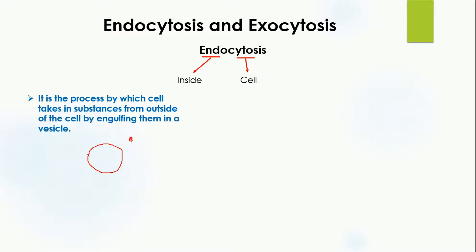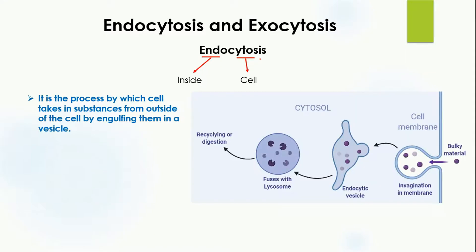Here is a diagram representing endocytosis. The outside part of the cell has bulky material present. What happens is that the cell membrane starts to invaginate — it folds inward — to allow this material to move from outside to inside the cell.